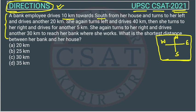The bank employee drives 10 km towards south. Suppose this is the starting point — her house. South is downward, so she travels 10 km southward from her house.